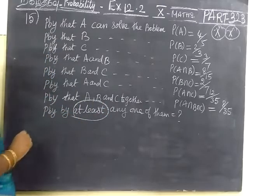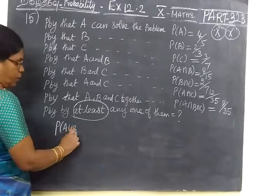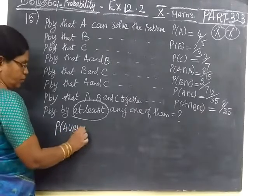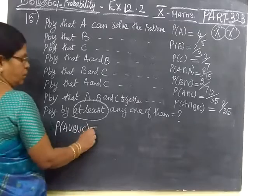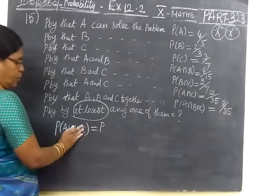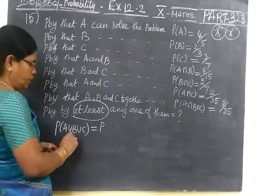So any one of them we have to find. At least, at least in a way already we told you. P of A union B. We are using the formula, P of C also. So P of A union B union C equal to.